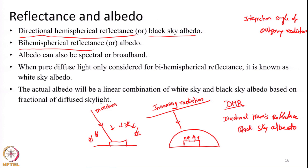That is bihemispherical reflectance — generally it is albedo. Albedo can refer to anything, but in the broadest sense albedo refers to bihemispherical reflectance. So if we come across the term albedo in textbooks related to climate, meteorology, snow, or cryosphere studies, we can always associate it with bihemispherical reflectance.